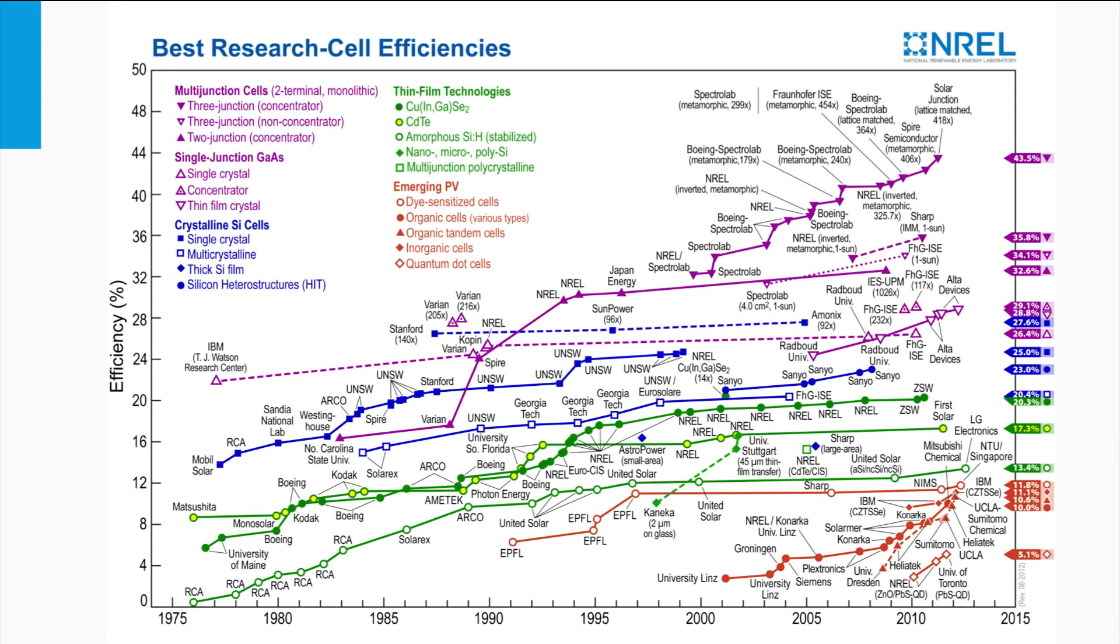The purple colored markers represent the 3-5 technology based on single, double and triple junctions, and have efficiencies ranging from 26% up to 44% under concentrated light conditions.